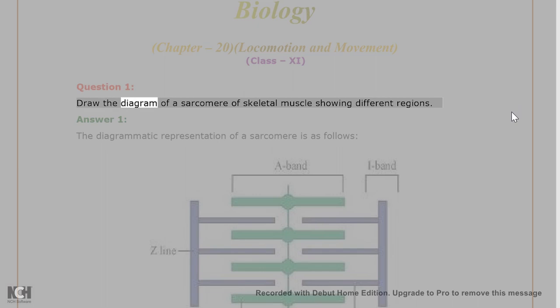Question 1. Draw the diagram of a sarcomere of skeletal muscle showing different regions. Answer 1. The diagrammatic representation of a sarcomere is as follows.